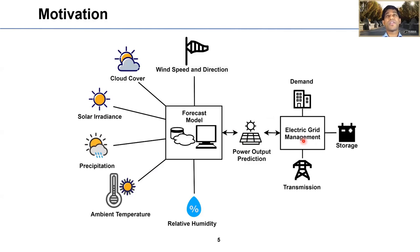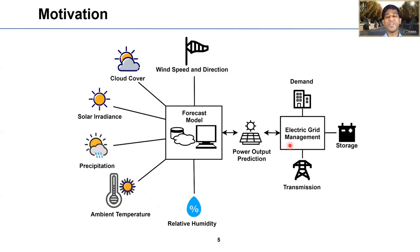An artificial intelligence-based forecasting model should take into account all important weather parameters like temperature, relative humidity, precipitation, solar irradiance, cloud cover, wind speed and direction, etc. This model has to be well integrated with the smart grid to make well-informed decisions for smooth operations and provide uninterrupted power to communities.